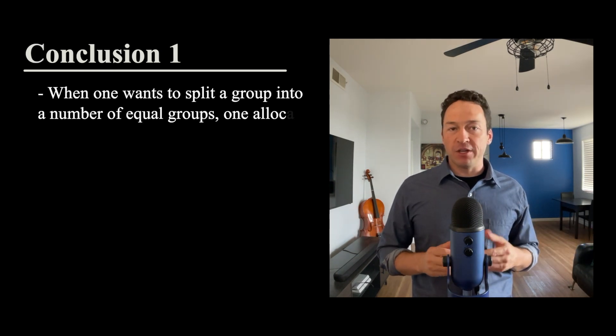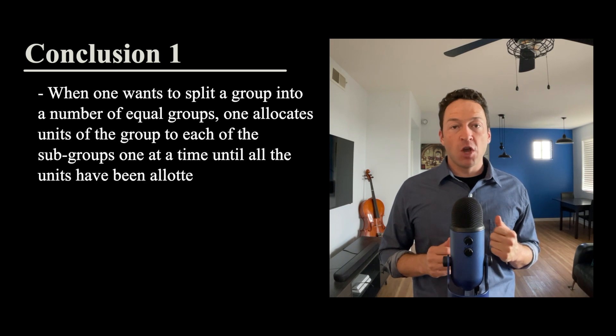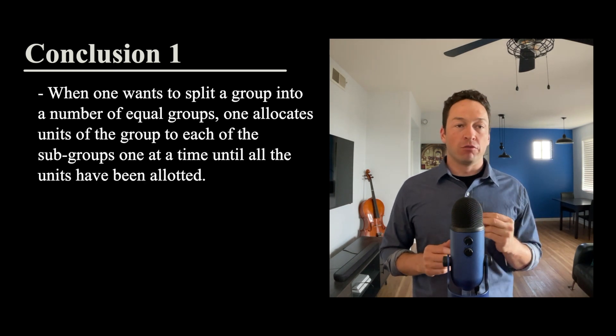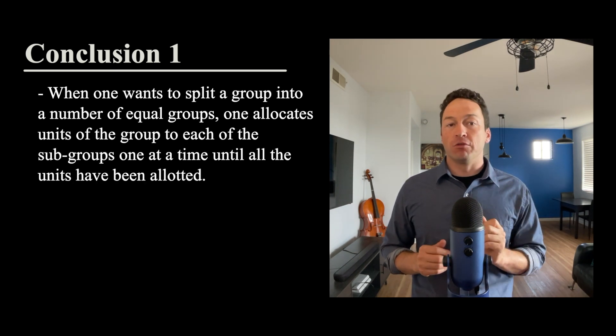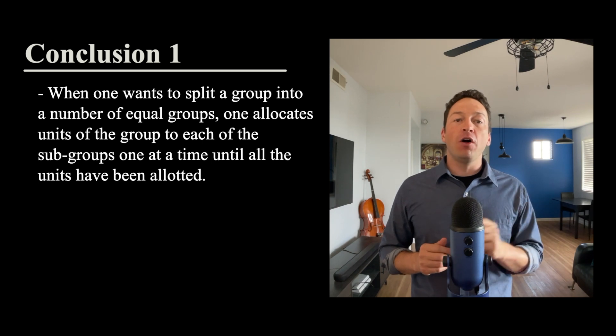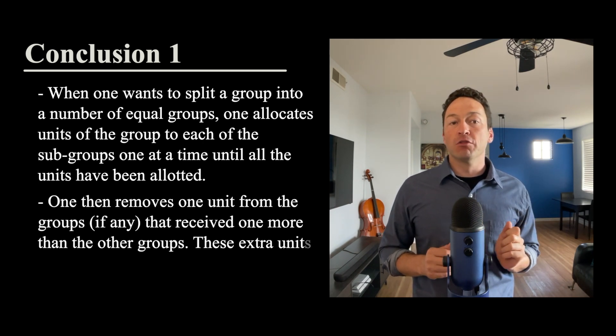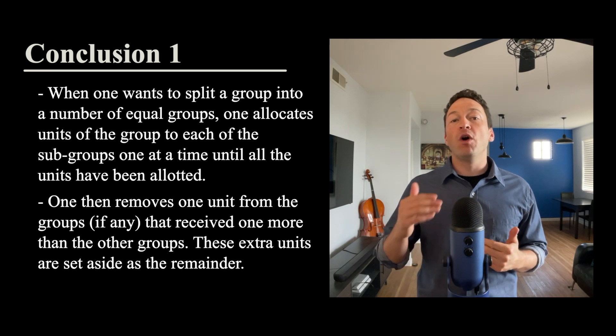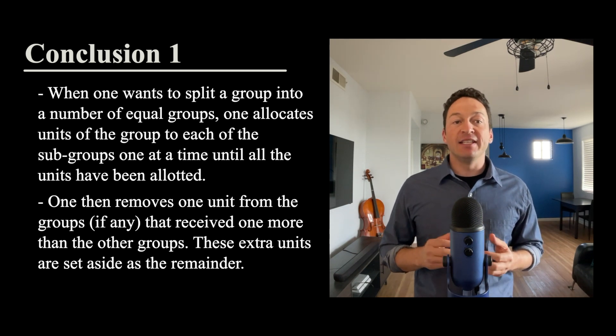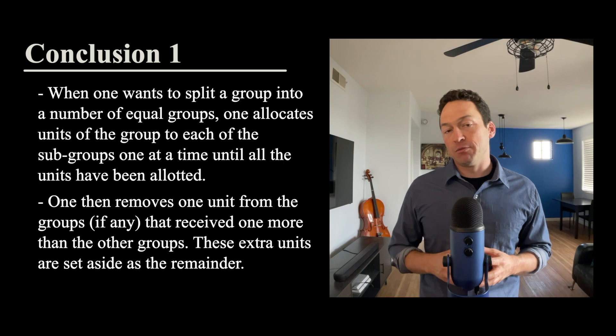Conclusion one: when one wants to split a group into a number of equal groups, one allocates units of the group to each of the subgroups, one at a time, until all the units have been allotted. One then removes one unit from the groups, if any, that received one more than the other groups. These extra units are set aside as the remainder.